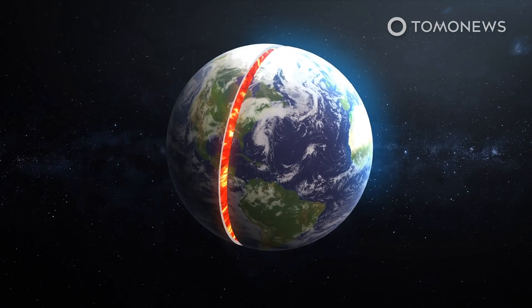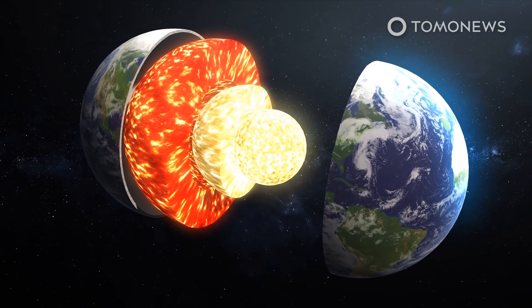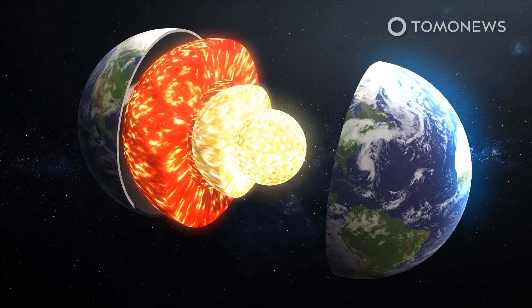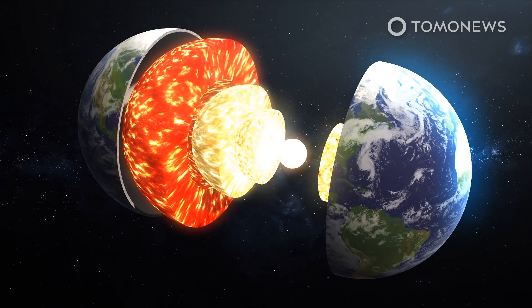For instance, traditionally, students have been taught that the Earth has four distinct layers: the crust, the mantle, the outer core, and the inner core. But earlier this year, researchers from the Australian National University provided evidence of an additional layer inside the inner core.